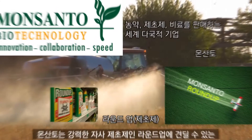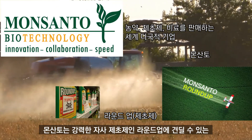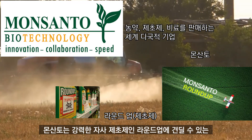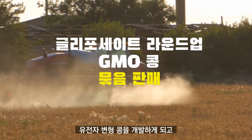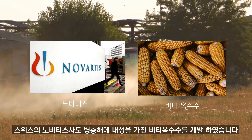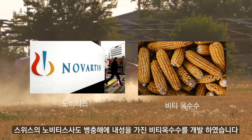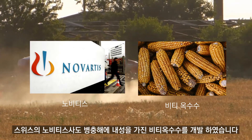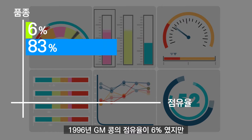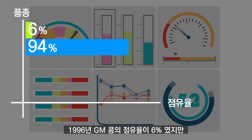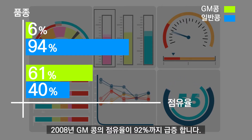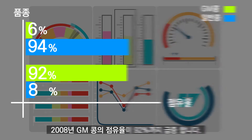1995년 몬산토는 강력한 자사 제초제인 라운드업을 견딜 수 있는 유전자 변형 콩을 개발하게 되고, 스위스의 노바티스사도 병충해 내성을 가진 BT 옥수수를 개발하였습니다. 1996년 GM 콩의 점유율이 6%였지만 2008년에는 92%까지 급증합니다.